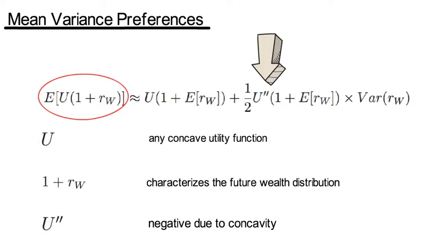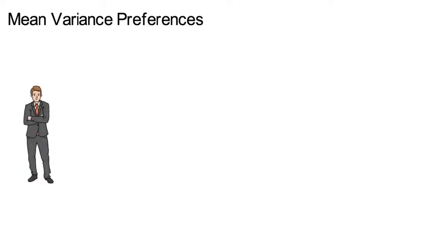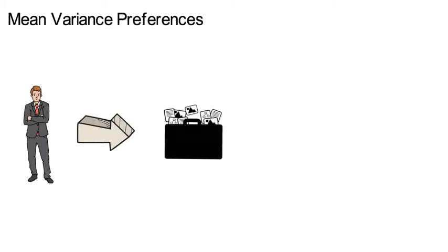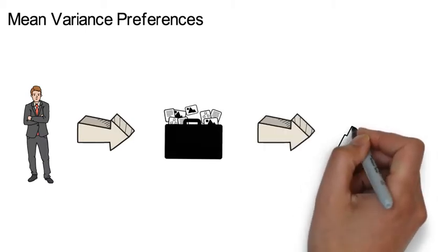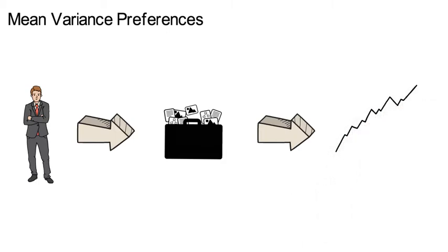These are the preferences for which Markowitz in 1952 solves the optimal portfolio selection problem. A mean variance investor wants to find a portfolio that generates a wealth distribution 1 plus rw that maximizes the expected mean variance preference function.